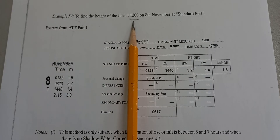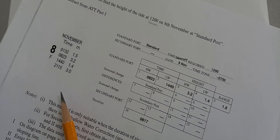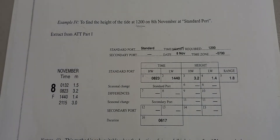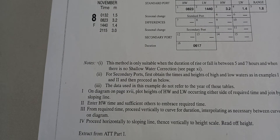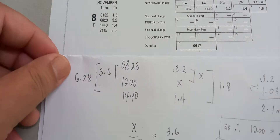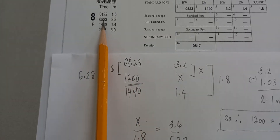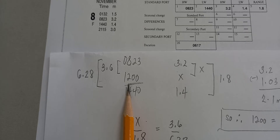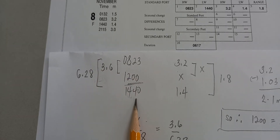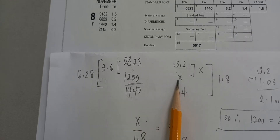To get the height of water at 1200, you need to interpolate because there is no exact value of 1200 listed in this standard port. To interpolate, we use 0823 and 1440 because 1200 falls in the middle. 0823 corresponds to 3.2 meters, and 1440 corresponds to 1.4 meters — and 1200 is the value we need to find.